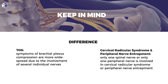Keeping in mind that the symptoms of brachial plexus compression are more widespread, due to the involvement of several individual nerves, will help us distinguish this pattern from cervical radicular syndrome and entrapment neuropathies, in which only one spinal nerve or only one peripheral nerve is involved.